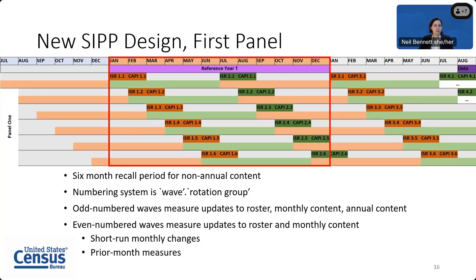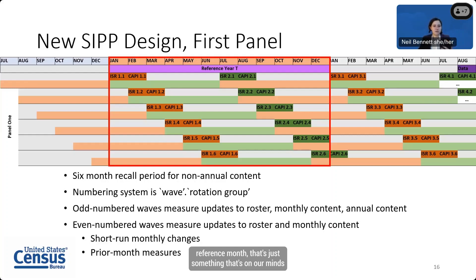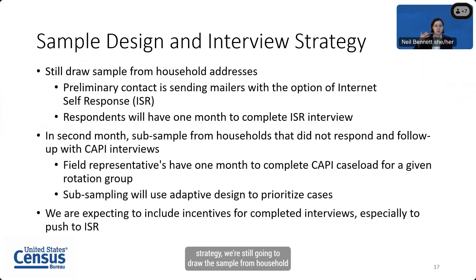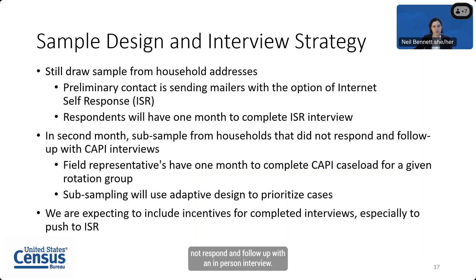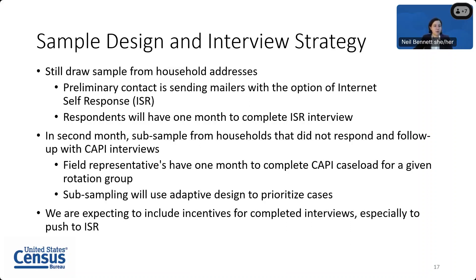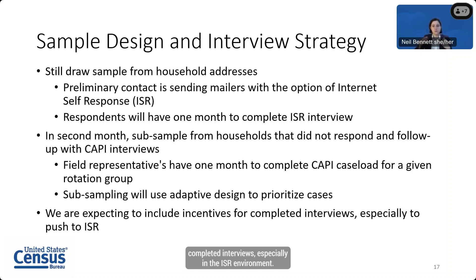The common reference month for odd-numbered wave interviews is December of the reference year, which we're considering using as the common reference period for all annual content — similar to the 2014 design. We're also thinking about shifting interviews forward a month and using January as the common reference month. For the sample design, we'll draw the sample from household addresses, with preliminary contact via mailers offering internet self-response — a web push design. Respondents will have one month to complete their interview online, then in the second month we subsample non-respondents for in-person follow-up. Subsampling will use adaptive design to prioritize cases, and we're expecting to include incentives.